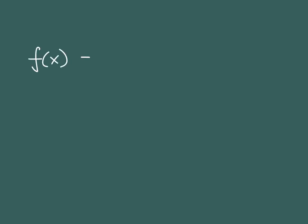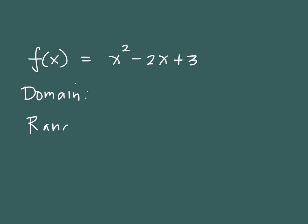Let's apply this in an example. We are given f of x equals x squared minus 2x plus 3. The domain, since it is a quadratic function, is x such that x is an element of the real numbers — no further work needed. For the range, we will use the vertex. We identify a equals 1, b equals negative 2, and c equals 3, then apply negative b over 2a.